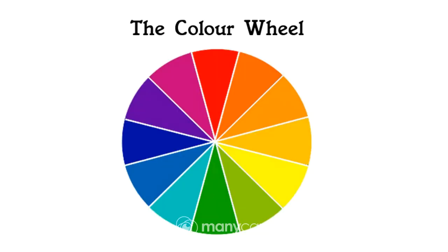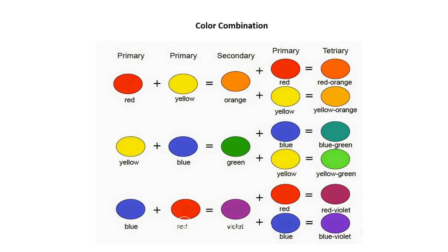Now we have the color wheel — the combination of the primary, secondary, and tertiary colors. This is it: we have the color combination of primary, secondary, and tertiary.